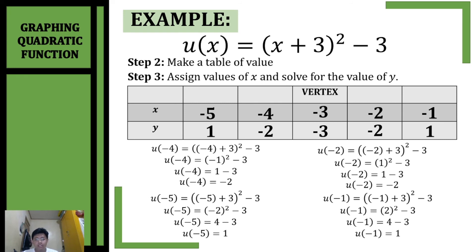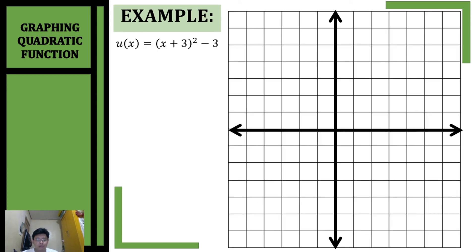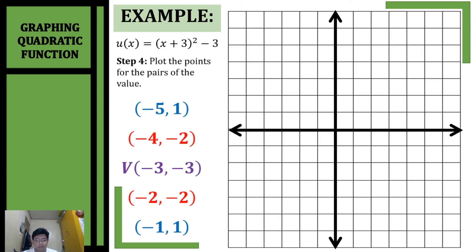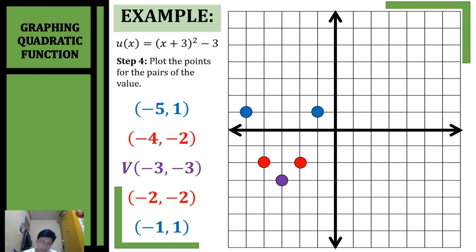Now that our table of values is complete, let's plot the points on the rectangular coordinate system. Starting with our vertex (-3, -3) — it's located here. Then (-2, -2) and (-4, -2), then (-1, 1) and (-5, 1). Connect the points by drawing a parabola, and this will be the graph of our quadratic function.